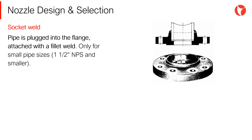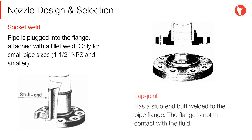Socket Weld flange — often used only for small pipe sizes, 1.5 inches nominal pipe size and smaller. Lap Joint flanges — they use a stub end that is butt welded to the pipe. The flange drills do not have to be carefully aligned before welding, which simplifies the installation.